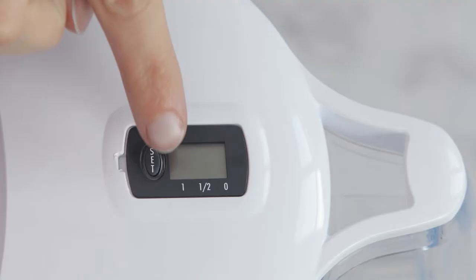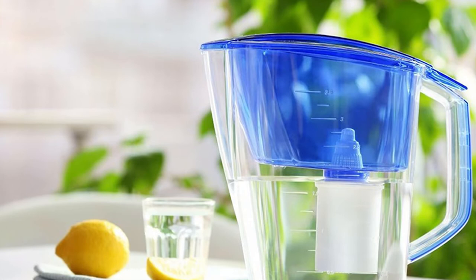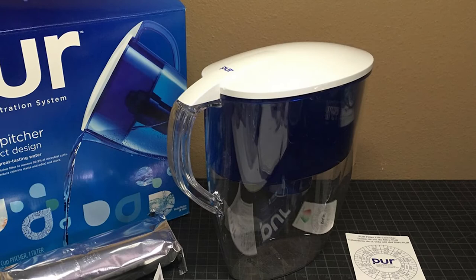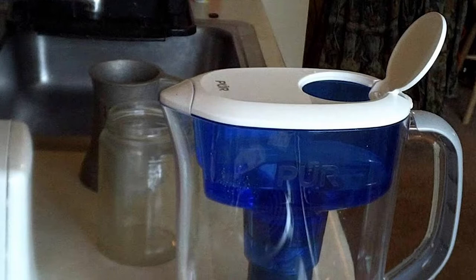For most Pur pitchers, there are two types of filters you can buy: standard and lead removal. The standard filter is rated to remove or reduce chlorine, heavy metals, particulates, some industrial pollutants, microbial cysts, some pesticides and herbicides, some pharmaceuticals, and some industrial chemicals. The lead reduction filter can reduce or remove chlorine, lead and other heavy metals, particulates, some industrial pollutants, microbial cysts, some pesticides and herbicides, some pharmaceuticals, and some industrial chemicals.